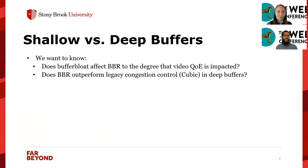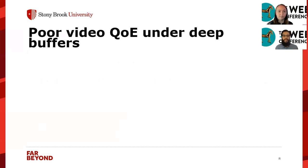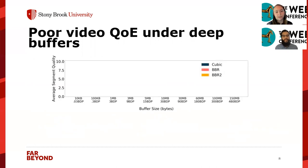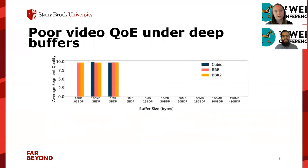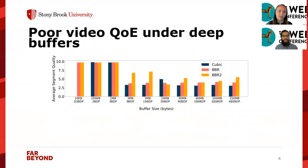The main parameter of interest was buffer size, because BBR is supposed to combat buffer bloat. You would think it would have higher video QoE than cubic, which is not configured to help with buffer bloat. Surprisingly, we find poor video QoE under deep buffers. In a graph with buffer size on the x-axis and average segment quality on the y-axis, for the first three buffer sizes — 10 kilobytes to 1 megabyte — performance is fairly good for all congestion controls. But after about 3 megabytes, quality drops steeply for all three. This is expected for cubic, but surprising for BBR, which was specifically designed to work well in deep buffers.